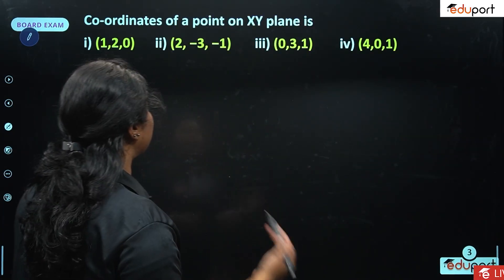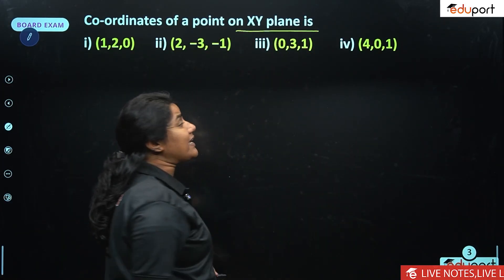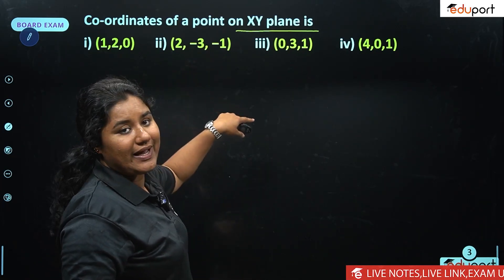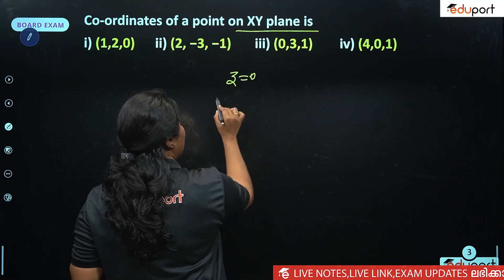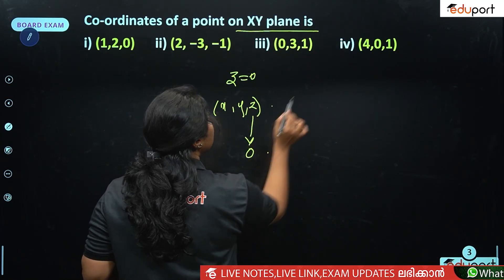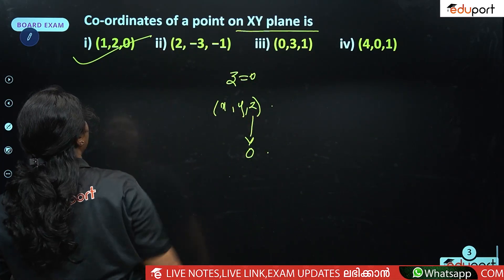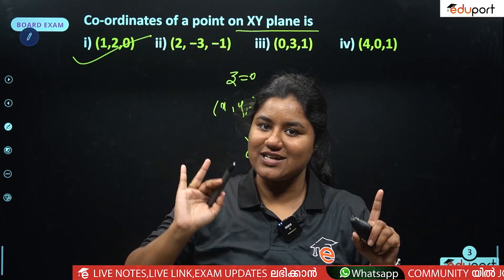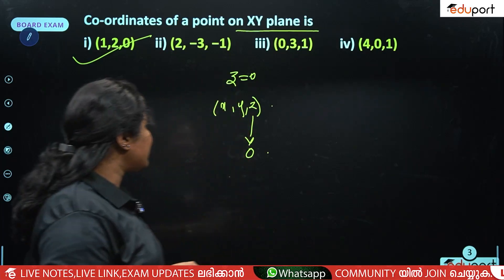I will ask you a question: what are the coordinates of a point on the xy plane? If you look at the xy plane, z is 0. So the coordinate would be something like (1, 2, 0) — option 1 — where z equals 0. That is the concept.